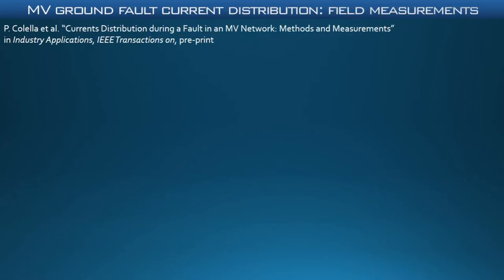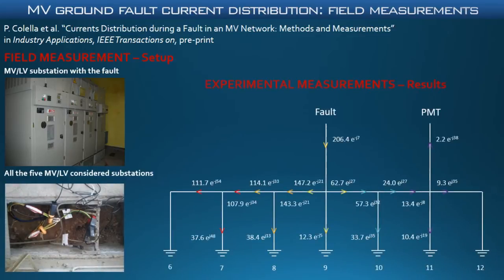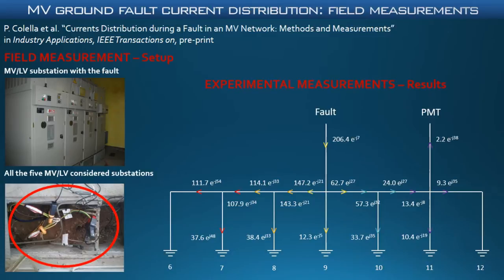These results are also confirmed by field measurements, which were performed on an MV distribution network, producing a real single line to ground fault and determining fault current distribution in five MV/LV substations — the faulted substation and the four neighboring ones. In each of the five substations, an equipotential node was formed connecting the MV cable shields and the earthing conductor together in the same location to enable the installation of current clamps. In the test, the measured total fault current was about 206 amps. However, thanks to the interconnection among earthing systems, in the earthing system of the faulted substation only 12 amps were injected. For the sake of brevity, I can't go into a detailed description of the field measurement, but you can find it in the paper cited in the slide.